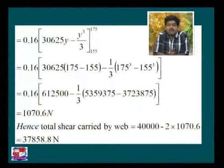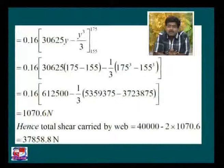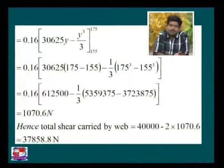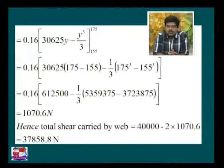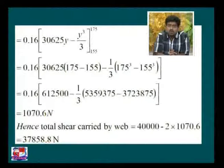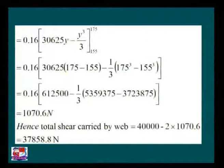The flange is taking only about 2000 Newton, so the remaining value will be taken care of by the web itself. Hence the total shear carried by the web is equal to 40,000 minus twice 1070.8, giving us 37,858.8 Newton — a huge shear resisted by the web.